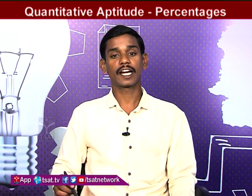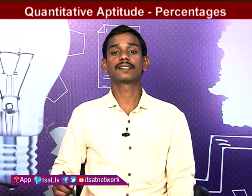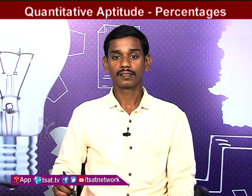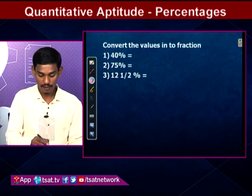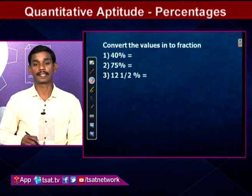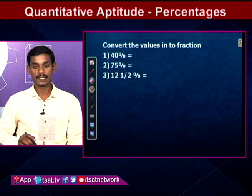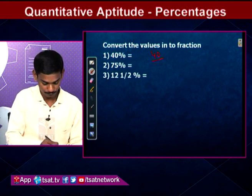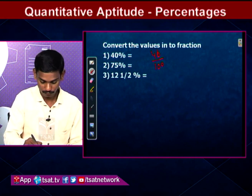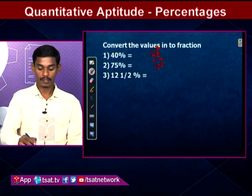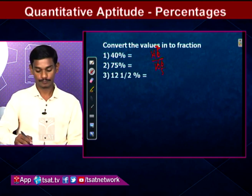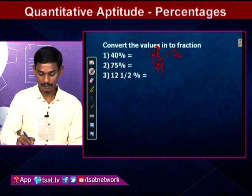Now convert percentages into fractions by dividing by 100. First: 40% = 40/100. The zeros cancel to give 2/5. Wait — simplifying: 40/100 = 4/10 = 2/5. The fraction shown is 5 by 4 after simplification.